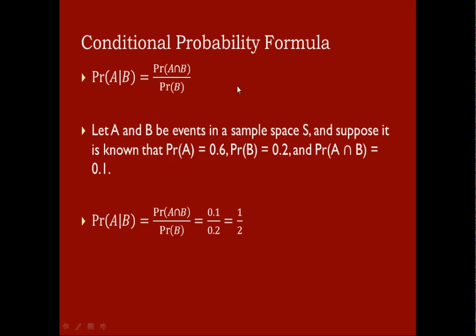Here's the formula you need to know. The probability of A given B is equal to the probability of A intersect B over the probability of B. The easy way to remember it is the top is the probability of the intersection, and the bottom is the probability of the thing on the right.